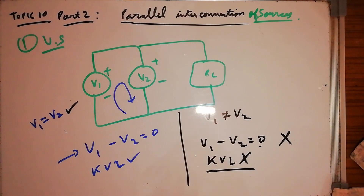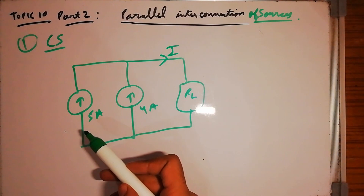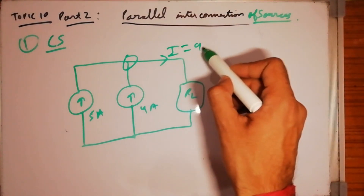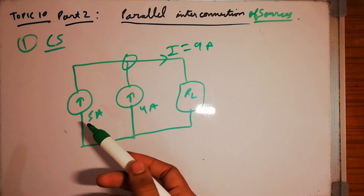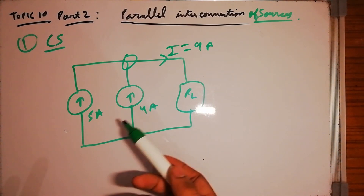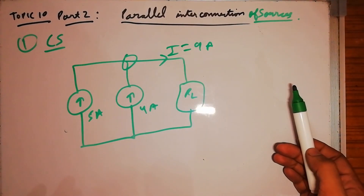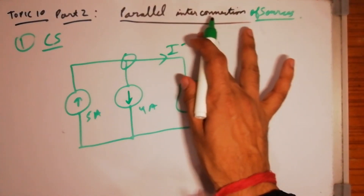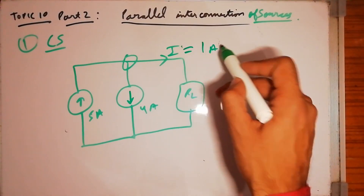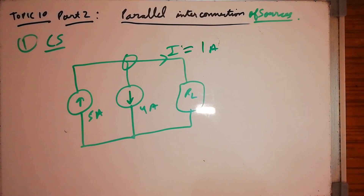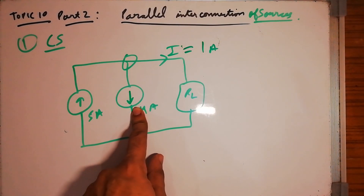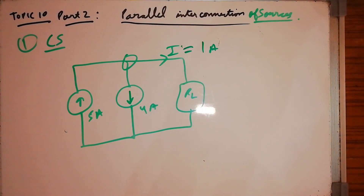Now for current sources in parallel: take 5 A and 4 A sources. Applying KCL gives 5 + 4 = 9 A — valid circuit. Even if we reverse the polarity of one source, KCL is still satisfied. So we can connect current sources in parallel in any way — with same or opposite signs — because KCL will always be satisfied.